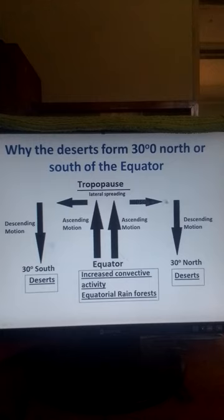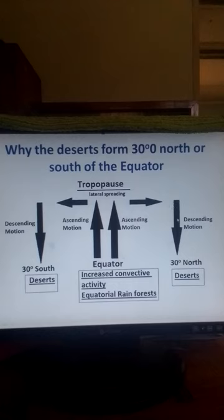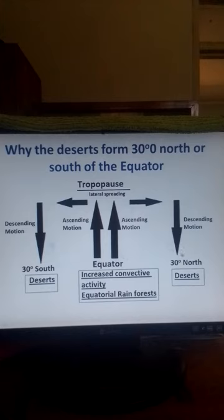As this air reaches 30 degrees north or south of the equator, it starts descending and moves down. As this air descends it warms, because descending air is compressed and therefore it warms. As this air moves down and warms, it also warms the land surface, and therefore evaporates the water on the surface in these regions, such that the climate that results here is dry — we have desert climates in this region.